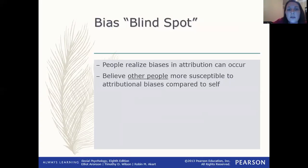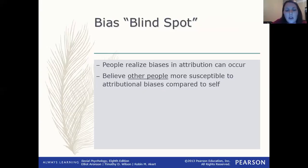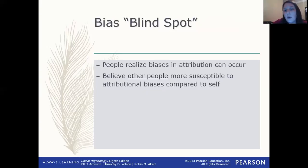Another thing we can realize is that there are biases in attributions — we can be weighted to think one way or another. But what we end up doing is saying, 'I don't tend to have those issues, but other people are pretty susceptible to making these incorrect attributions about people.' What we call this is a bias blind spot. We think that other people are more susceptible to these kinds of biases than we ourselves are.